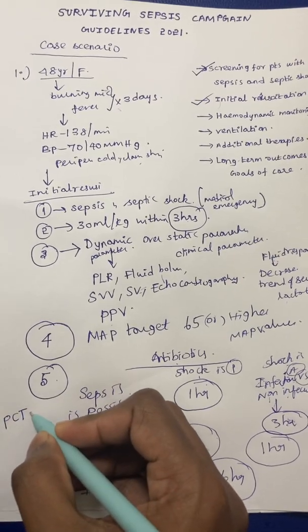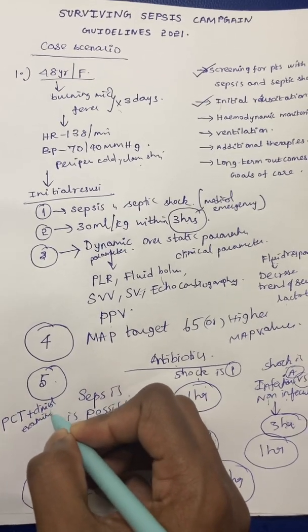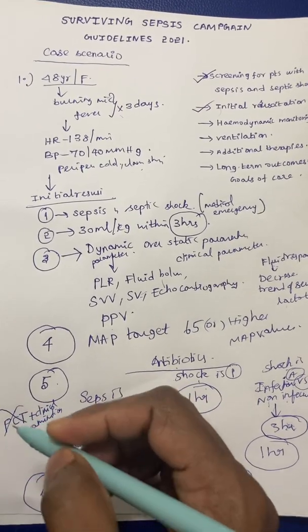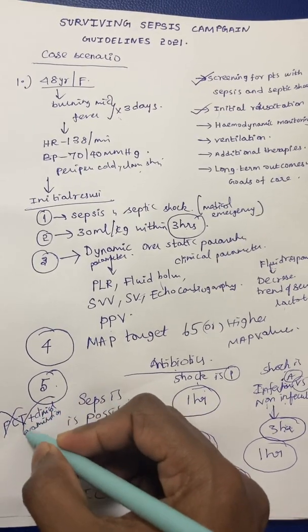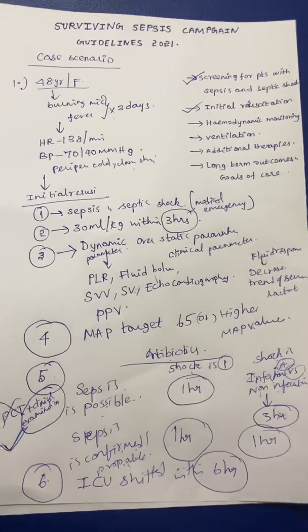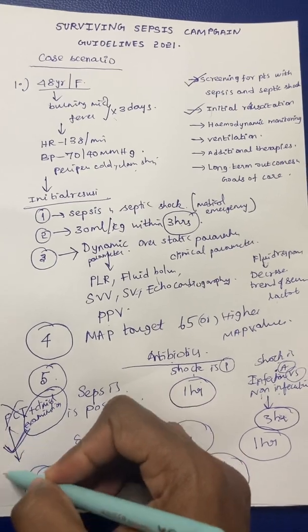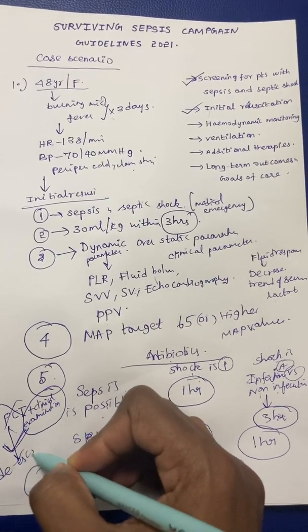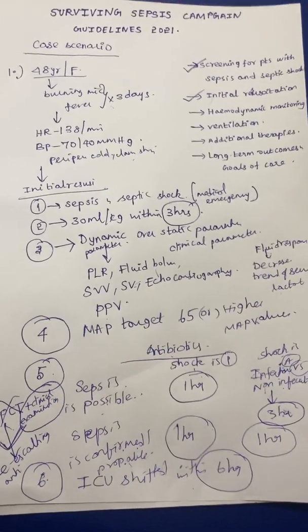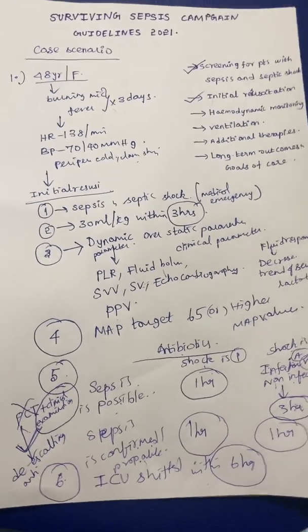Previously, procalcitonin combined with clinical examination was used as a tool for starting antibiotics. Now the 2021 guidelines recommend against the use of procalcitonin for guiding antibiotic initiation — clinical examination alone should guide that decision. However, serial procalcitonin values combined with clinical examination are still useful for de-escalation of antibiotics.